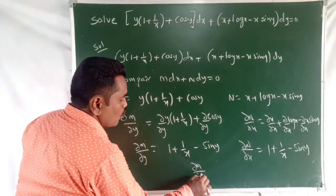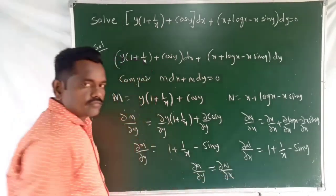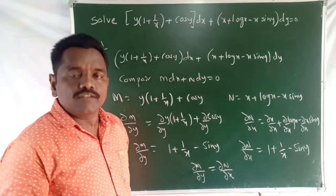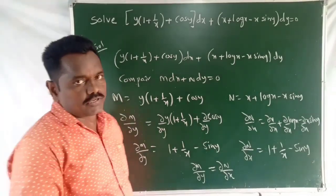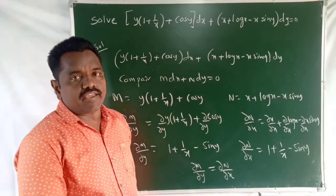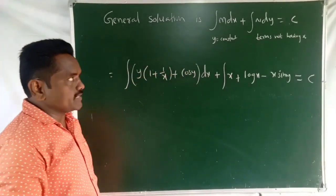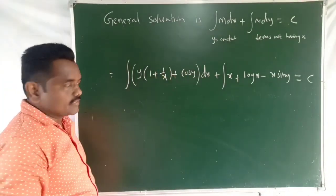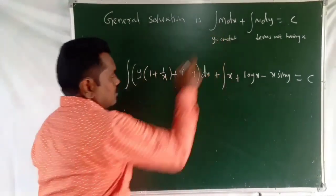Since ∂M/∂Y equals ∂N/∂X, both equal to 1 + 1/X − sin Y, this is an Exact Differential Equation. The general solution is integration of M dx plus integration of N dy equal to C, where Y is treated as constant.